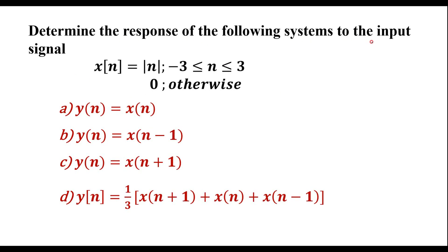Determine the response of the following systems to the input signal x[n] = |n|, where n varies from minus 3 to plus 3 and its value is 0 otherwise. We need to calculate: y[n] = x[n], y[n] = x[n-1], y[n] = x[n+1], and finally y[n] = (1/3) times the sum of these three. First, let me represent the x[n] signal.